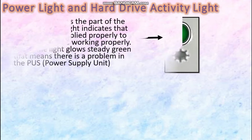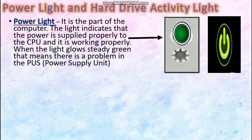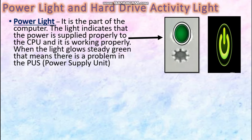Let us understand what is a Power Light and a Hard Drive Activity Light. The Power Light indicates that there is a proper supply of power or electricity to the CPU. When the light does not glow bright but glows steadily, that means there is a problem in the PSU. PSU stands for Power Supply Unit.